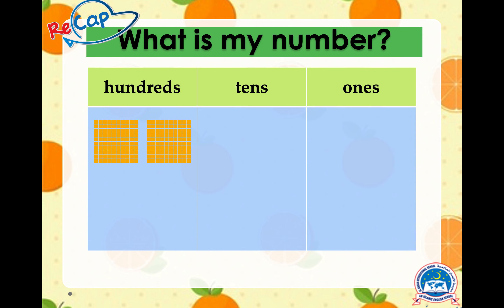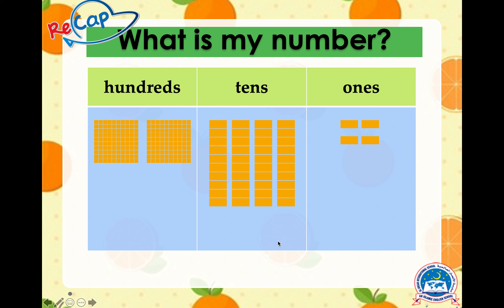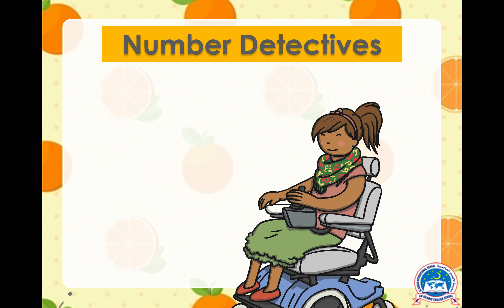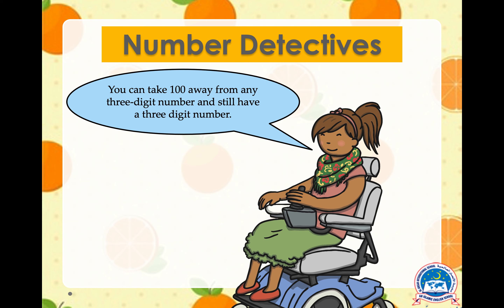Let's recap how to build a number. Here we have two groups of 100, four tens, and four ones. Can you guess what number this is? If you've guessed that this number is 244, amazing — well done!